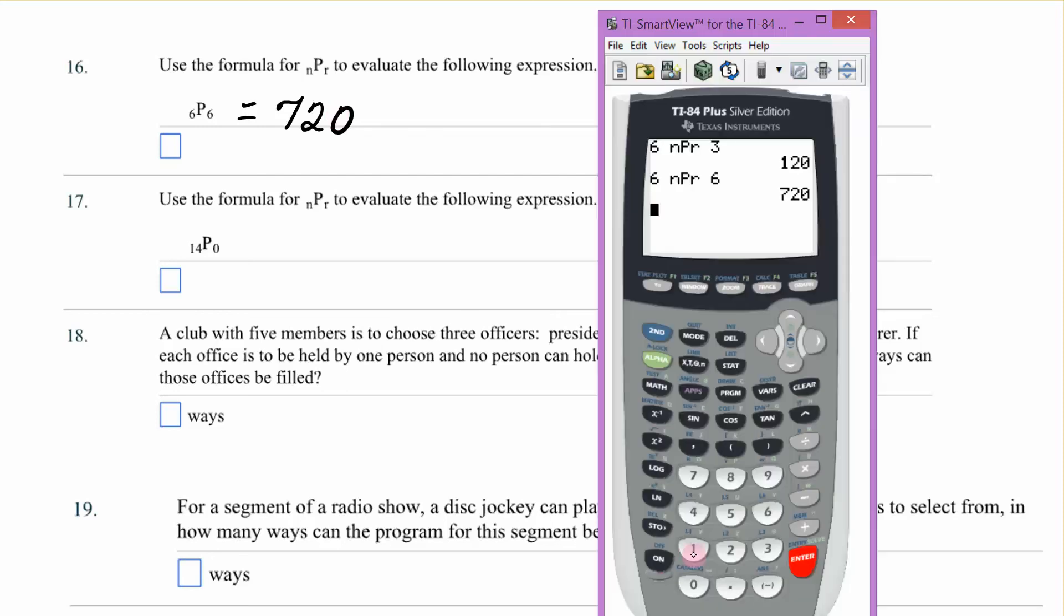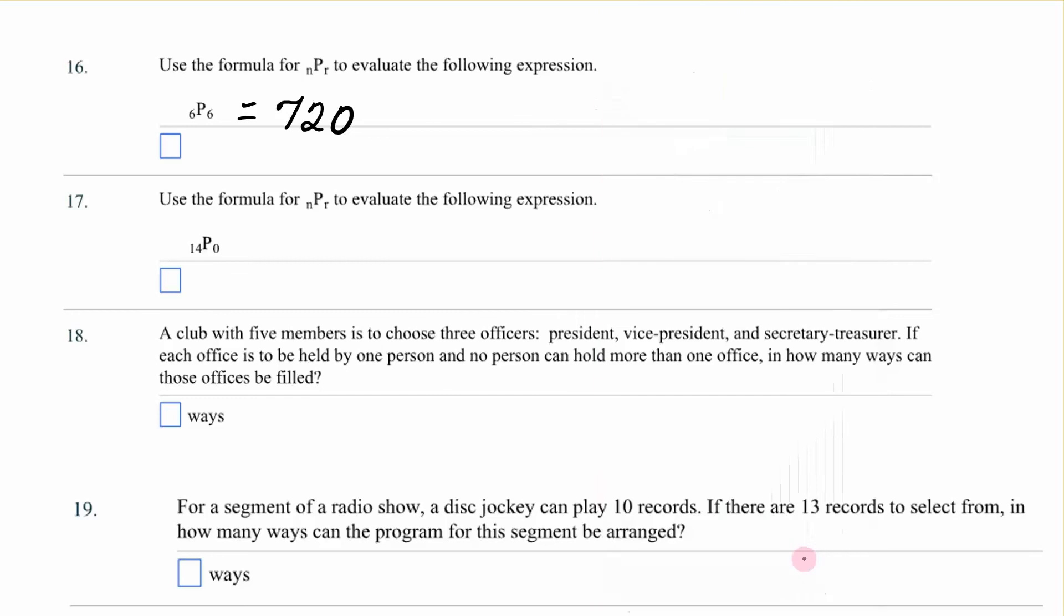Number 17. I want 14 math. Number two. And I'm taking 14 items zero at a time. I will have one. There's only one way to get nothing.